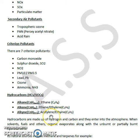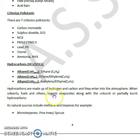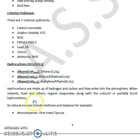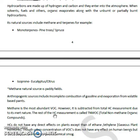Now we will be discussing the details of hydrocarbons. Hydrocarbons are made up of hydrogen and carbon and they enter into the atmosphere from various sources. Natural sources of hydrocarbons include methane and terpenes — for example, monoterpenes, which are emitted by pine trees or spruce trees; isoprene, which is emitted by eucalyptus and citrus; and methane, which is emitted by paddy fields.